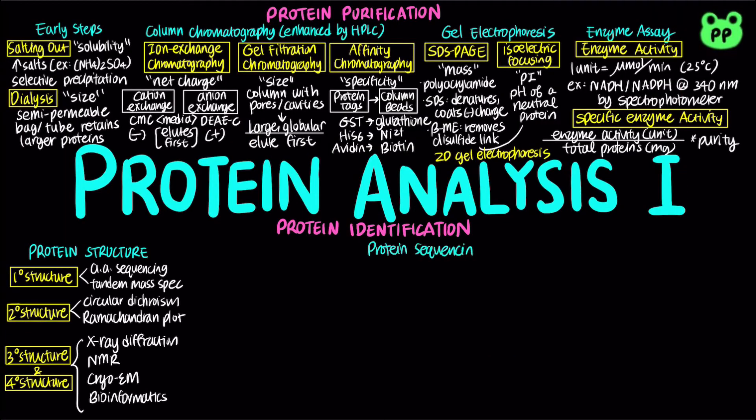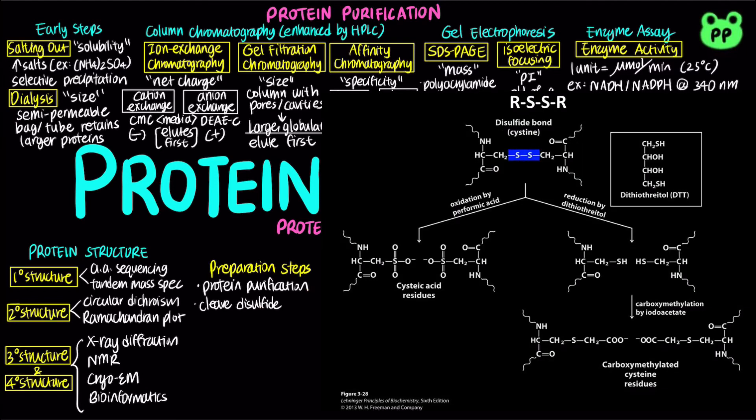There are two main preparatory steps to protein sequencing. The first step involves protein purification. If the protein contains more than one polypeptide chain linked by disulfide bonds, it needs to be cleaved. There are two methods of breaking the disulfide bonds: oxidation by performic acid, or reduction by dithiothreitol, abbreviated as DTT, or beta-mercaptoethanol, abbreviated as BME, which is followed by carboxymethylation by iodoacetate to make the reaction irreversible.